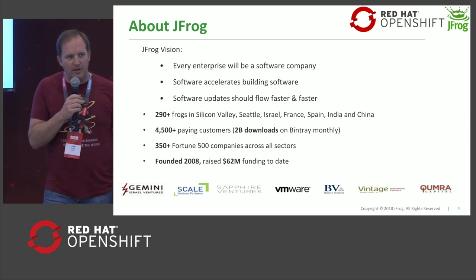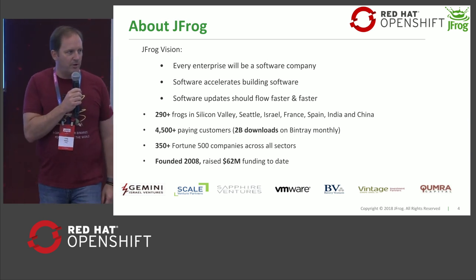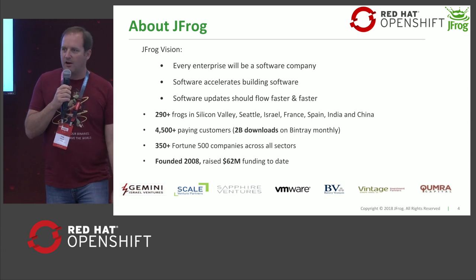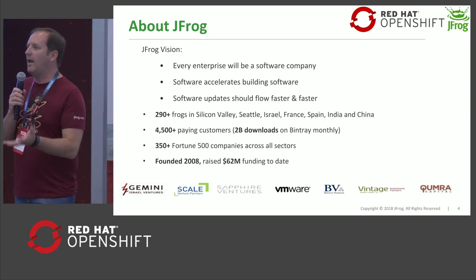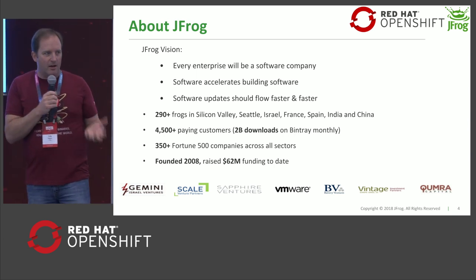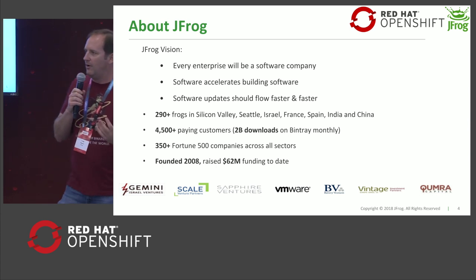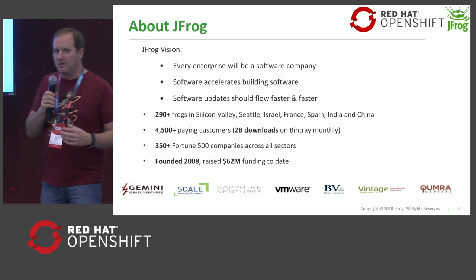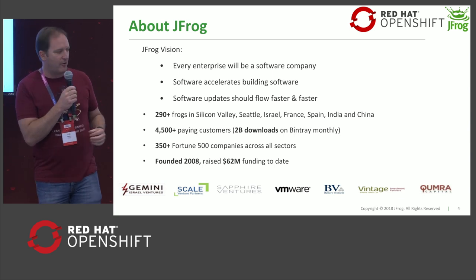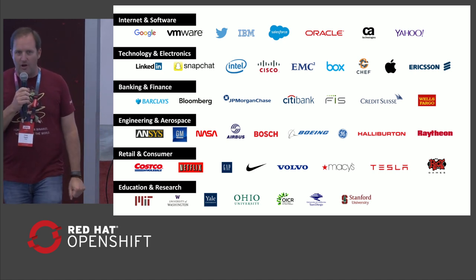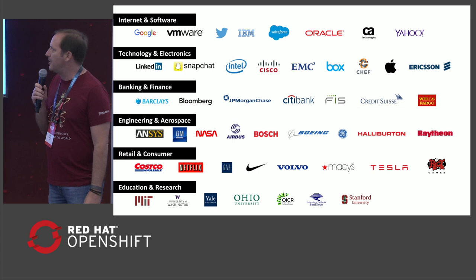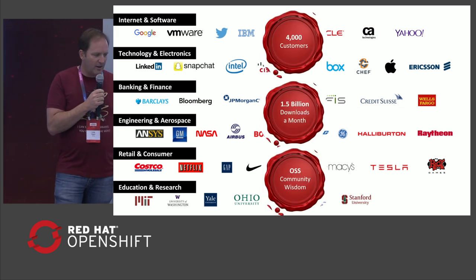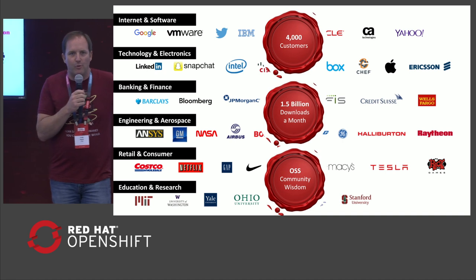About JFrog: our vision is to enable software organizations to ship their software safely and reliably to any kind of environment. Our target can be OpenShift, traditional application stacks, LAMP, whatever. We believe that automating the build and delivery of software is what helps us go fast and go safe. We believe that software updates should flow, and we have a lot of evidence to show that many people believe this as well. We have a very large customer base across many industries — from big internet and service providers all the way through engineering, research, aerospace, education, and so forth. We've got a lot of downloads and strong support of the open source community.